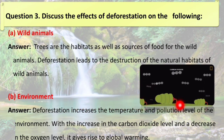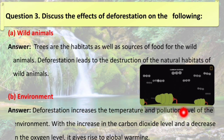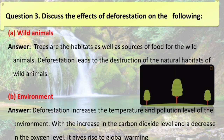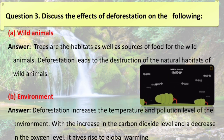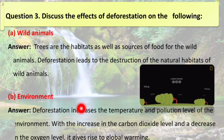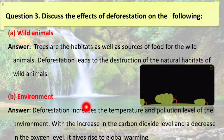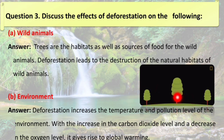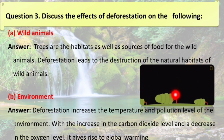Effect on the environment: deforestation increases the temperature and pollution level of the environment. With the increase in carbon dioxide level and a decrease in oxygen level, it gives rise to global warming. Trees perform photosynthesis — they accept carbon dioxide and release oxygen. When we cut trees, the carbon dioxide level in the atmosphere increases significantly, which causes global warming.